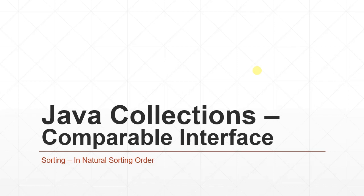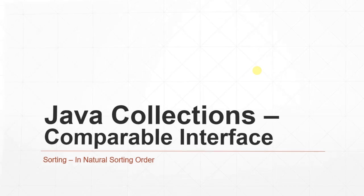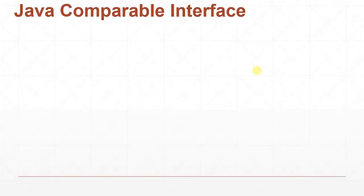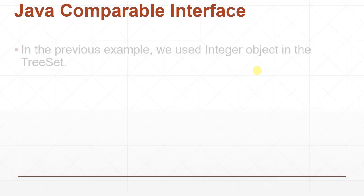Hello friends, in this video we are going to look at the usage of the Comparable interface. This Comparable interface is useful to define a natural sorting order for custom classes. Here in this video we are going to look at the Java Comparable interface.